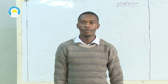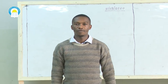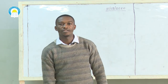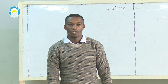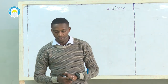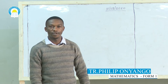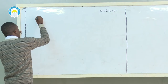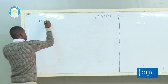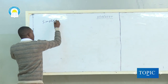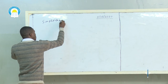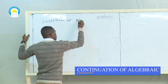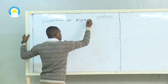My name is Philip Onyango. I'm a teacher of Bokolsun and we are going to continue with algebraic expressions. Today we are going to be tackling what we call simplification of algebraic expressions. I'll start by writing the topic: simplification of algebraic expressions.